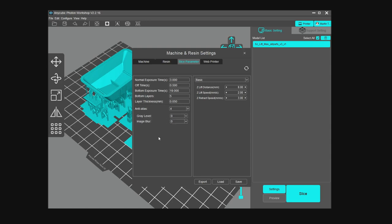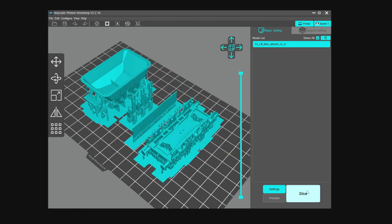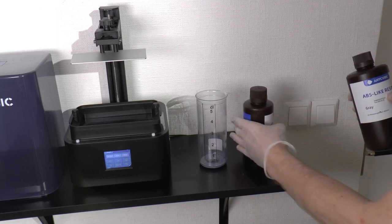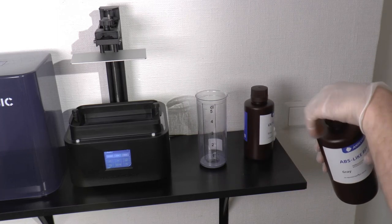One which is important is to set anti-alias up to four. We're going to set the layer thickness to 0.03 millimeter, and for my printer here I select also the normal and bottom layer exposure time.